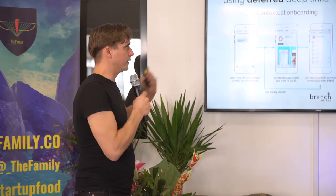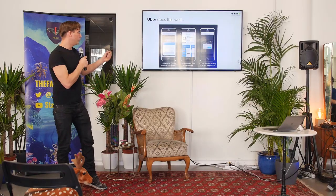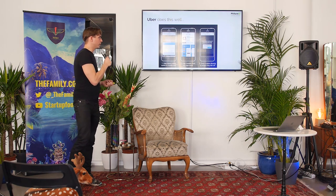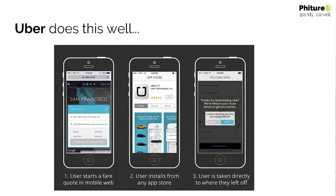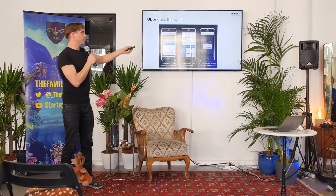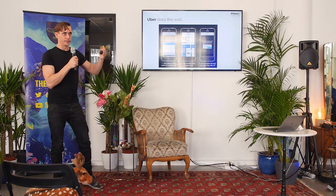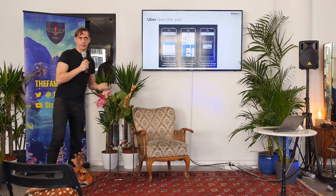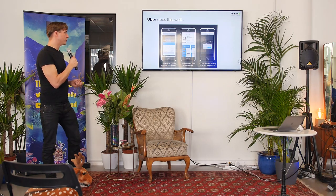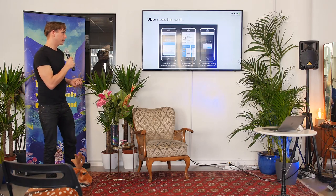Uber does this too — you can start booking your trip on mobile web, it forces you to download the app for location tracking and payments, but then it persists your booking information through into the app. This is called deferred deep linking. To have that set up you'd want to use either your attribution provider or a dedicated deep linking product like Branch or Yozio.